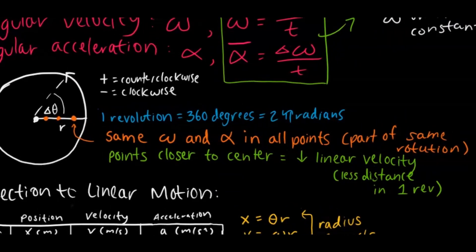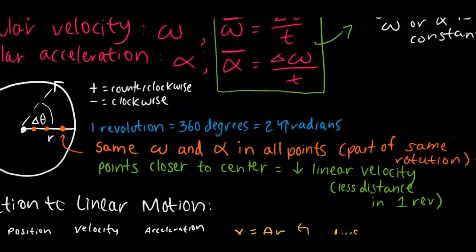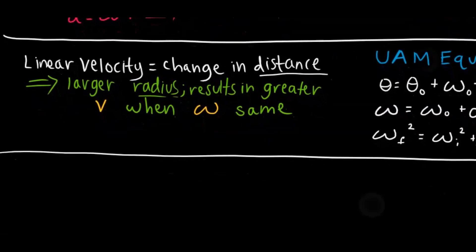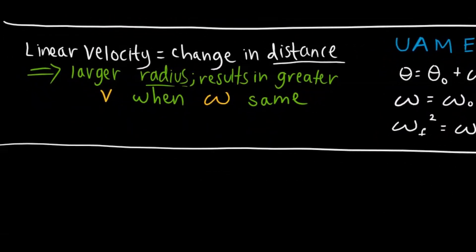All points of the same rotating object share the same angular velocity and acceleration. Points closer to the center have a decreased linear velocity because there's less distance covered in one revolution. Linear velocity corresponds to the change in distance — a larger radius results in a greater change in distance when the rotation rate is the same. For example, a circle of 2 cm diameter and one of 10 m diameter both completing one revolution in two seconds will have very different linear velocities.